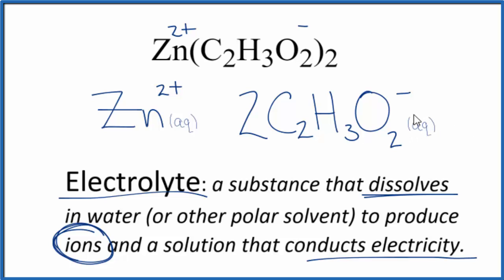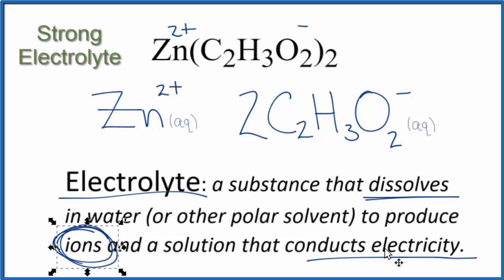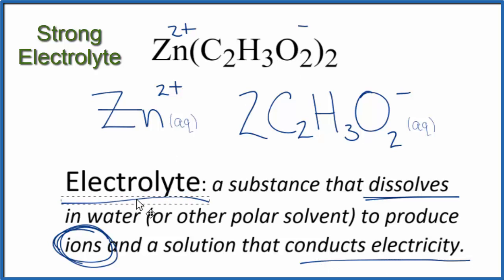To answer our question whether zinc acetate is an electrolyte or a non-electrolyte: it does dissolve in water, it produces ions, and since it dissociates completely, it produces a lot of ions, which means it will conduct electricity very well. Therefore, zinc acetate is a strong electrolyte.